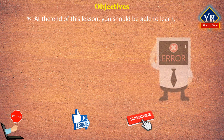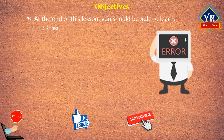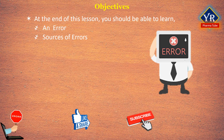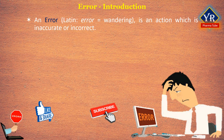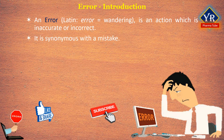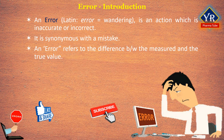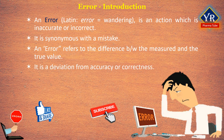At the end of this lesson, you should be able to learn to define an error, classify different sources of error and the different types of error. An error, from the Latin word 'error' meaning wandering, is an action which is inaccurate or incorrect. In some usages, an error is synonymous with a mistake. In statistics, error refers to the difference between the measured and the true value. In other words, an error is a deviation from accuracy or correctness.